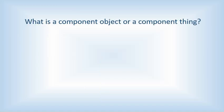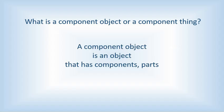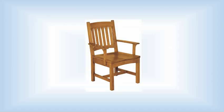What's a component object? Component or part. A component object is something that has parts, has components. A chair has components, legs, seat, back, maybe arms.